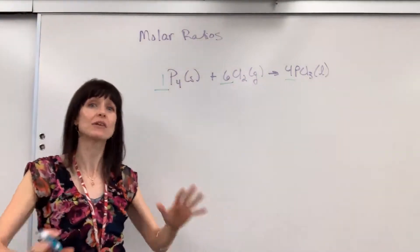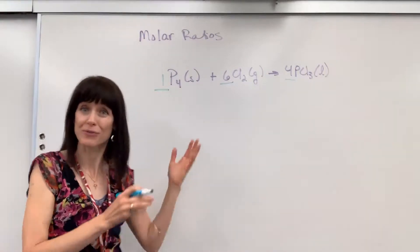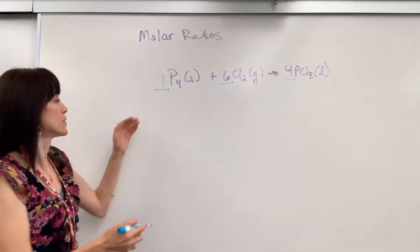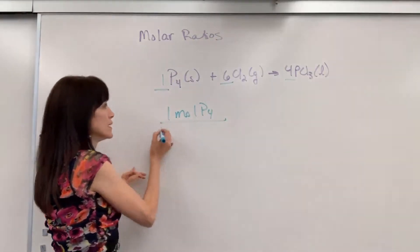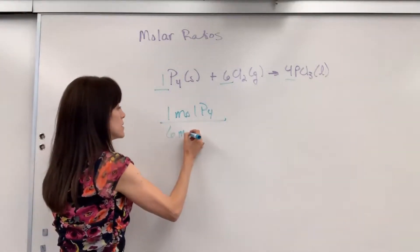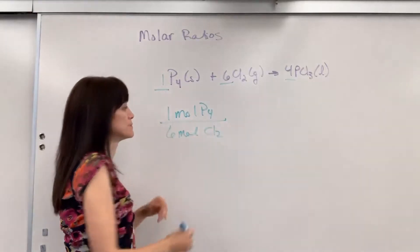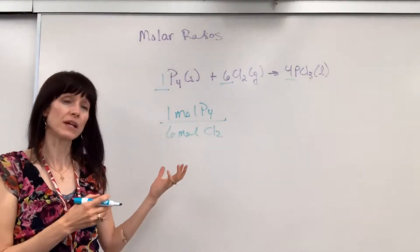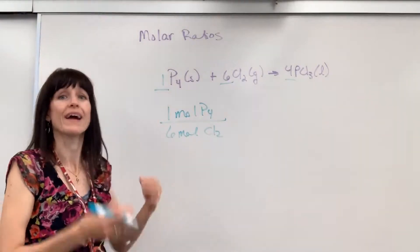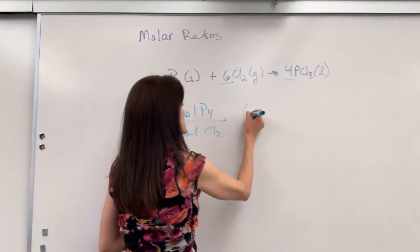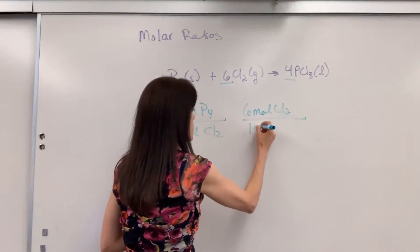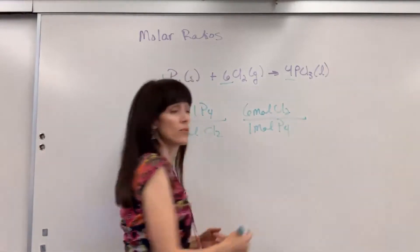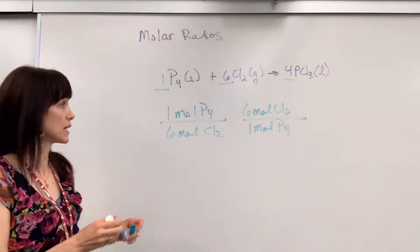Now we're going to write down every possible molar ratio from this chemical equation. So we could say one mole of P4 is going to react with six moles of Cl2. Now because this is a ratio we can actually write it the other way and it is equally true. Six moles of chlorine gas react with one mole of P4. That is also a true statement.